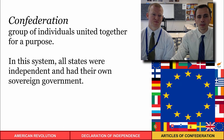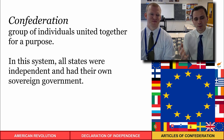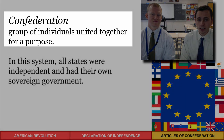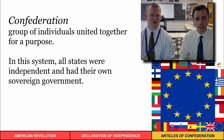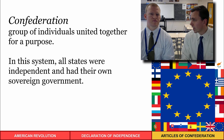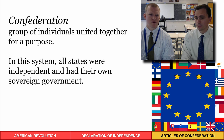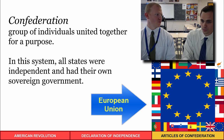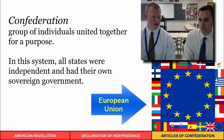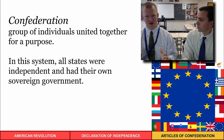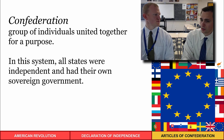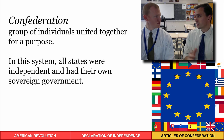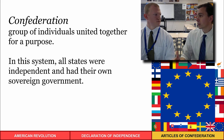A confederation is different from our federal government — it's a group of individual entities coming together for a purpose, where all independent states retain their sovereignty rather than collecting it into one national government. A modern example is the European Union, which comes together largely for economic policy and some defense purposes, sharing common currency and trade. Like the Articles of Confederation, the EU also has issues managing who has power and what role each nation plays for the greater good.